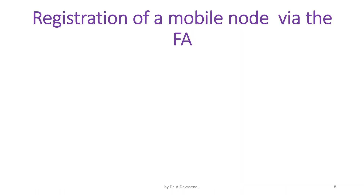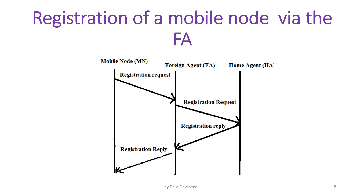Registration of a mobile node via the foreign agent is shown in the diagram. The registration request is generated by the mobile node and sent to the foreign agent (FA). The foreign agent in turn sends the registration request to the home agent. The home agent then sends the registration reply to the foreign agent.